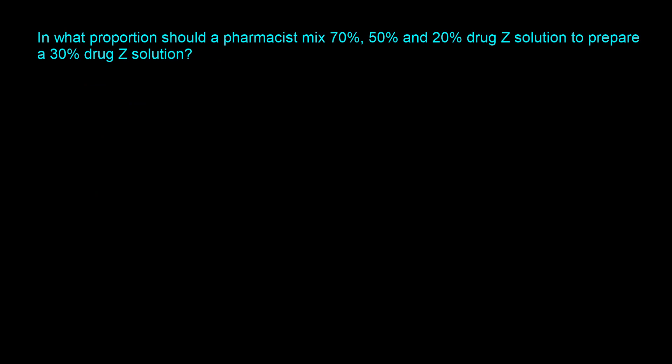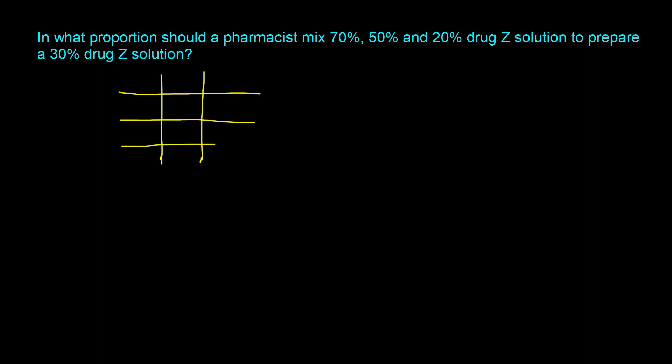This question says: in what proportion should the pharmacist mix 70%, 50%, and 20% drag-Z solution to prepare a 30% drag-Z solution? Here we have three components, and we set up the allegation grid similarly to the two-component version, except we add an extra horizontal line. So you draw your two vertical lines, your first and second horizontal lines as usual, and then a third horizontal line because we have three components.